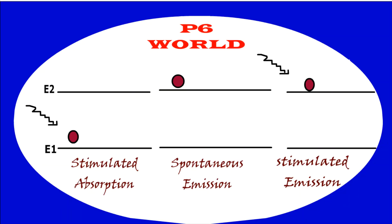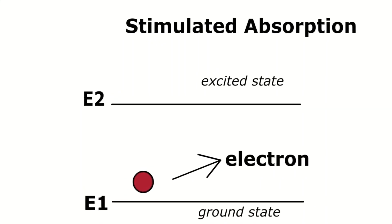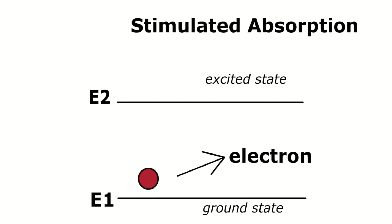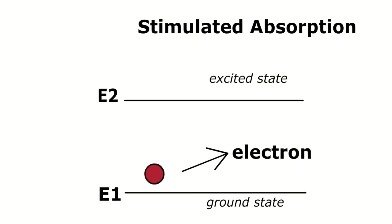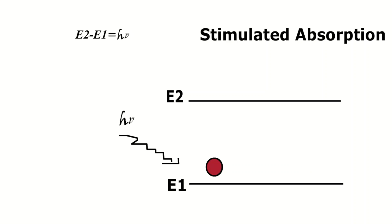Hello everyone, welcome to Physics World. Today we are going to learn about stimulated absorption, spontaneous emission, and stimulated emission — in order to understand how photons are generated. You can see two energy levels in the diagram: the lower energy level is E1 and the higher energy level is E2. Electrons are initially in the lower energy level.